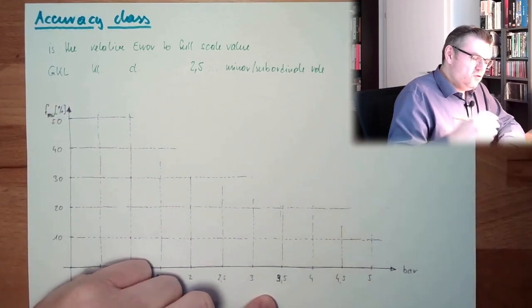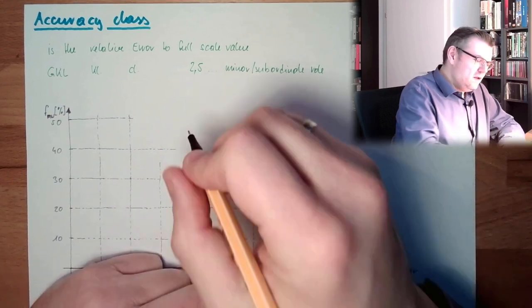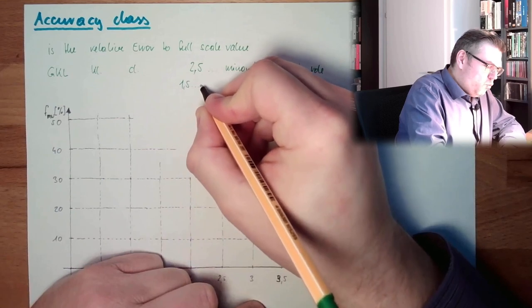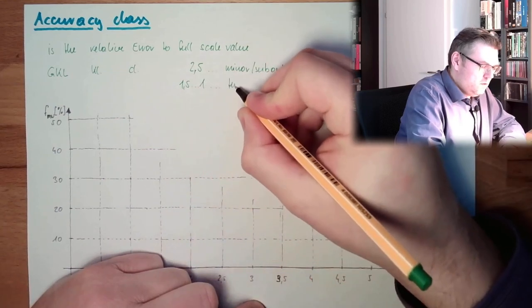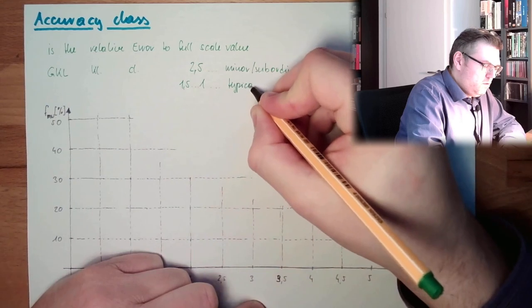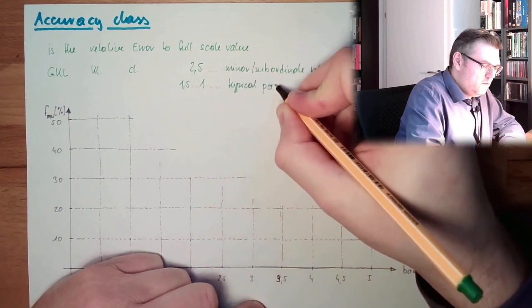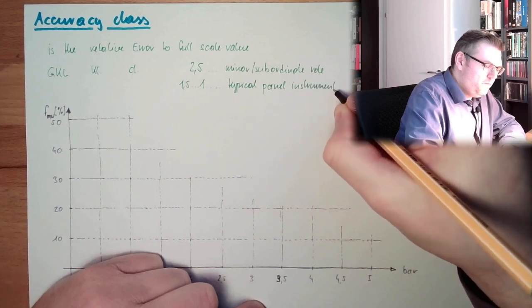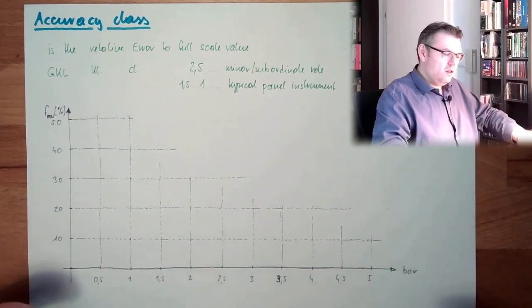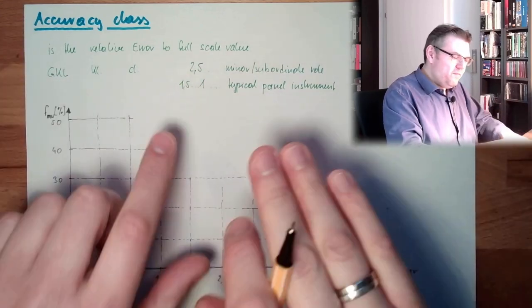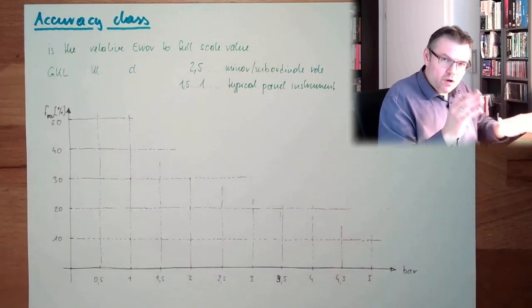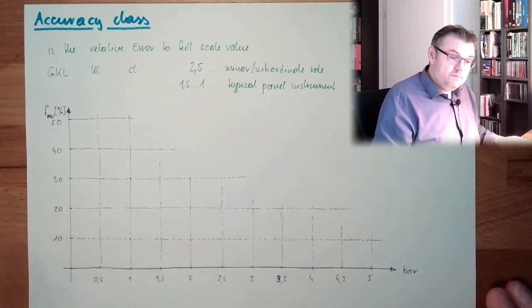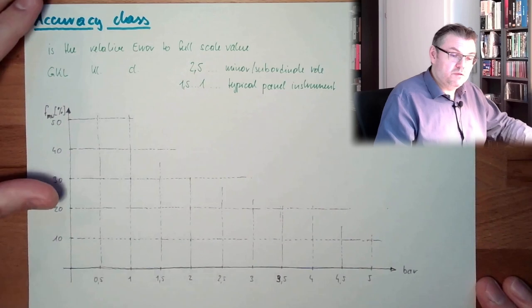Typical panel instruments, they have between 1.5 and 1, 1.1. So if you have somewhere operator panel, and there are instruments inside, then they are usually class 1, 1.5, something like this. So 1% of the full-scale value error, 1.5% of the full-scale value error.